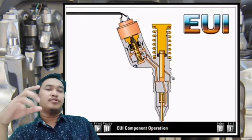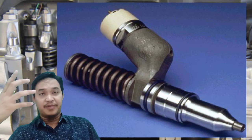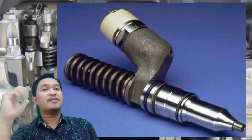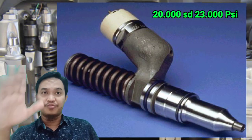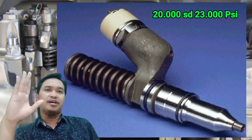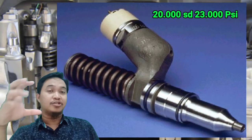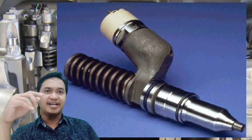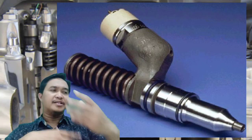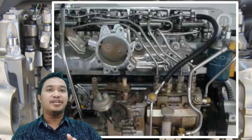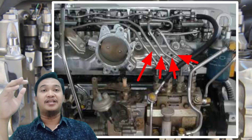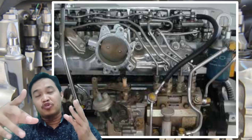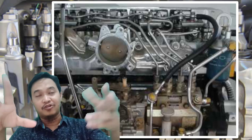Electronic unit injector lebih unggul daripada fuel injection pump yang sudah kita bahas. Karena dia bisa menghasilkan 20.000 sampai 23.000 PSI, sedangkan fuel injection pump yang kemarin kita bahas hanya 17.000 PSI. Kenapa lebih tinggi? Karena pada fuel injection pump ada pipa high pressure line dari FIP ke injektor yang cukup panjang, sehingga otomatis ada rugi-rugi daya pada saat fuel terinjeksi ke nozzle.